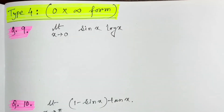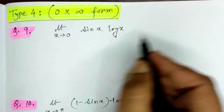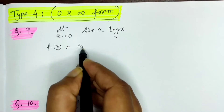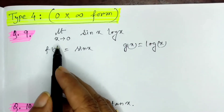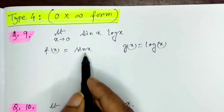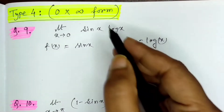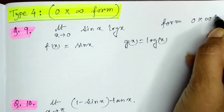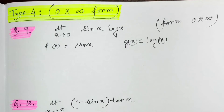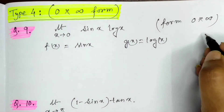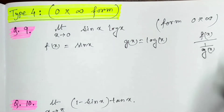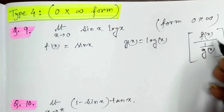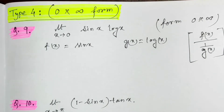If the function is in the form of sin x · log x, consider f(x) = sin x and g(x) = log x. When x → 0, sin 0 = 0 but log 0 = −∞. So it's in the form of 0 into infinity. To convert this, write f(x) divided by (1/g(x)), so log x goes to the denominator as 1/log x. This gives 0 by 0 form, and we can apply the same process to solve it.